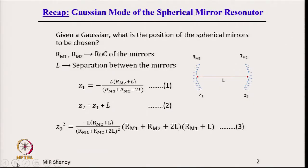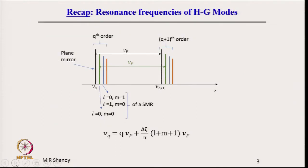A very quick recap on the Gaussian mode of the spherical mirror resonator. The problem we addressed is: given a Gaussian, what is the position of the spherical mirrors to be chosen? If R_m1 and R_m2 are the radii of curvature of the mirrors and L is the separation, then the position of mirror m1 is z1 (equation 1) and z2 = z1 + L. We also obtained an analytical expression for z_naught squared, where z_naught is the Rayleigh range. For a given resonator with R_m1, R_m2, and L given, we can determine z_naught squared.